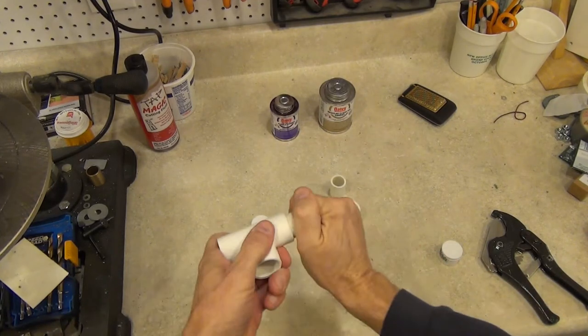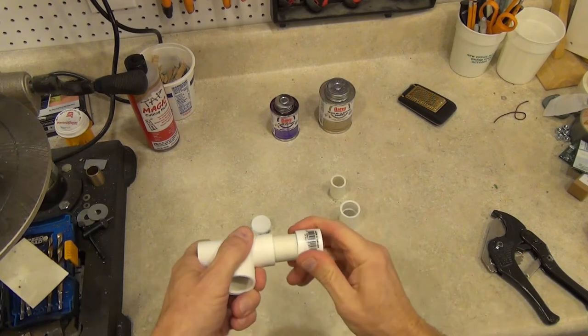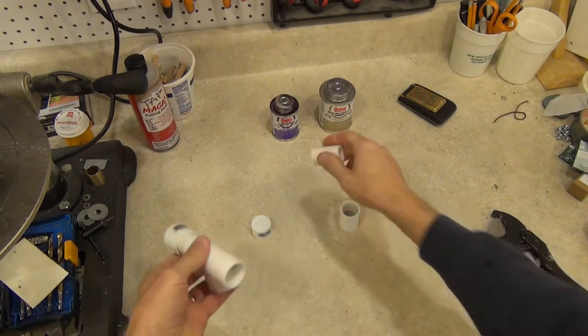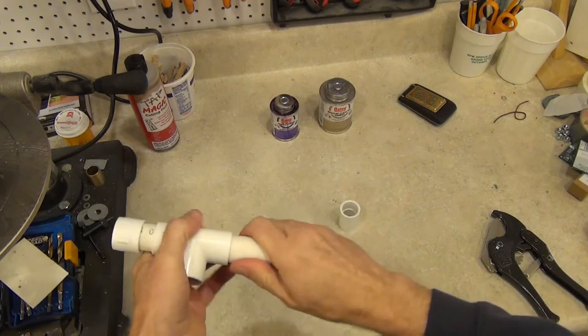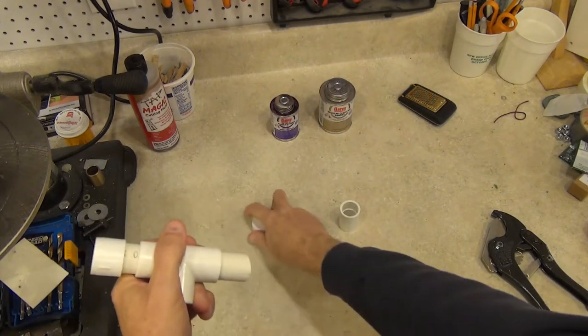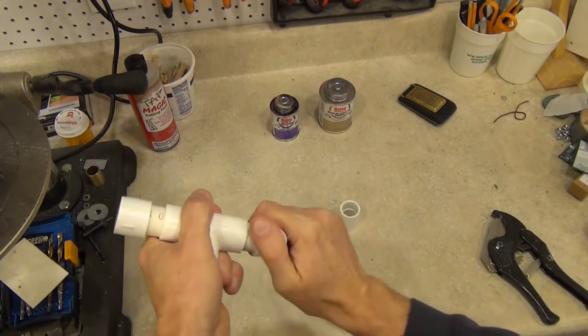Push one of the short pieces into the end of the T, then push an end cap on. Repeat for the other side. There is no need to glue these pieces together unless you just want to.